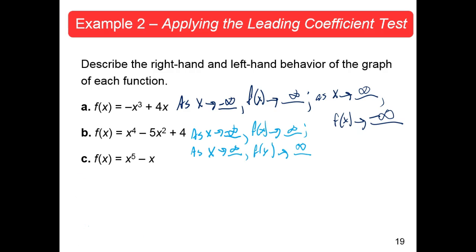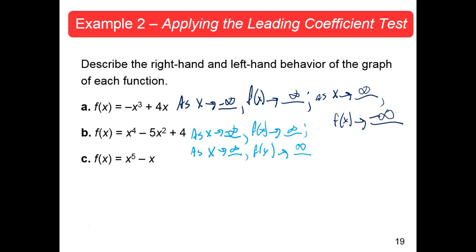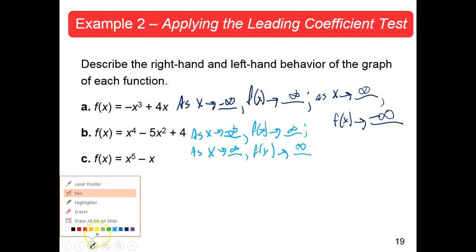For function B: because this is an even exponent, you know the end behavior goes in the same direction. And because that's a plus sign — a positive coefficient — both f values are positive infinity. You're done. That's your answer.